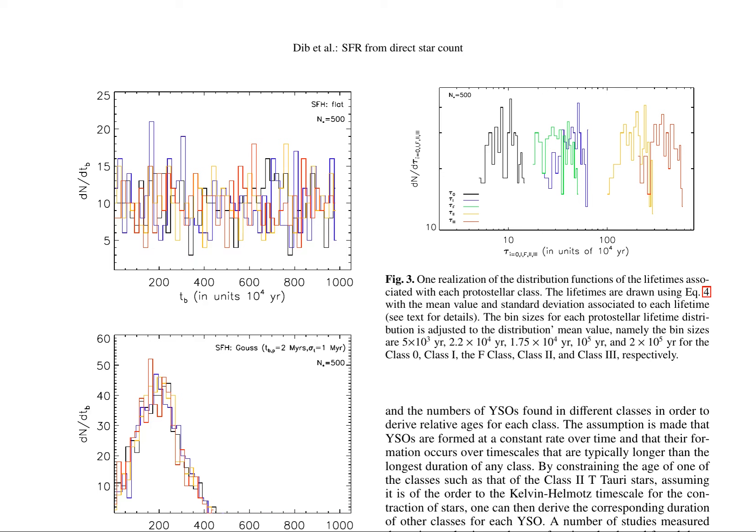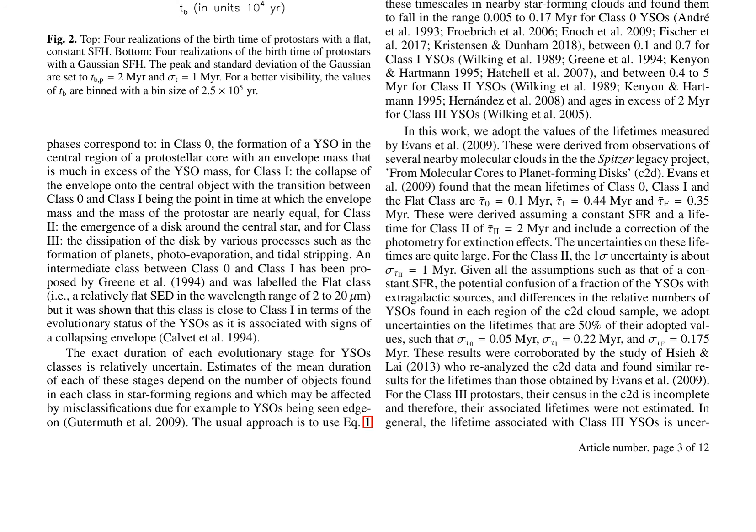The exact duration of each evolutionary stage for YSOs is uncertain, and estimates of the mean duration of each stage depend on the number of objects found in each class and star-forming regions, which may be affected by misclassifications. The usual approach is to use the number of YSOs found in different classes to derive relative ages for each class, assuming a constant star formation rate. The authors adopt the values of lifetimes measured by Evans et al. (2009), derived from observations of several nearby molecular clouds in the Spitzer Legacy Project. These lifetimes include mean lifetimes of class 0, class 1, and the flat class: 0.1 Myr, 0.44 Myr, and 0.35 Myr, respectively. The uncertainties on these lifetimes are large, and the authors adopt uncertainties of 50% of their adopted values.